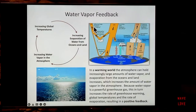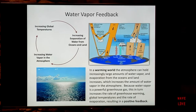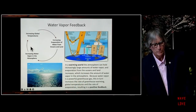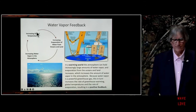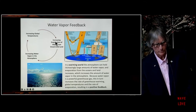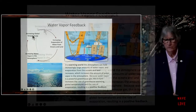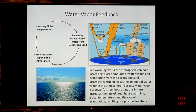The water vapor feedback loop works like this: increasing global temperatures produce increasing evaporation from the oceans and land. As evaporation increases, that produces increasing water vapor in the atmosphere, and as the atmosphere warms it can hold more water vapor. More water vapor in the atmosphere traps more heat, producing additional warming, which produces additional evaporation, which puts additional water vapor in the atmosphere, producing additional warming. It's a positive feedback loop, and about a third to a half of the warming over the last 120 years has been the result of this water vapor feedback loop amplifying greenhouse-effect warming.